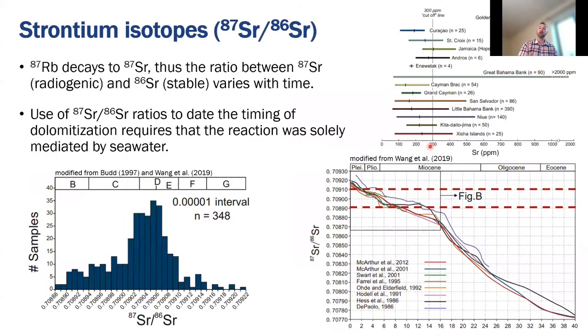So for these island type dolomites, the most common way that we determine the timing of dolomitization is through the application of strontium isotopes. Rubidium 87 decays to strontium 87, and there's been these secular variations in marine strontium ratios over time. The plot on the lower left here comes from Ru Wang's paper in sedimentary geology where they compiled strontium isotope ratios from all of these island type dolomites worldwide, and you can see that most of these values fall between 0.7089 to 0.70910. This may reinforce the idea originally proposed by David Budd that there's a series of dolomitization events in the late Miocene to early Pliocene.